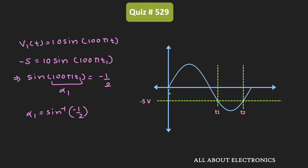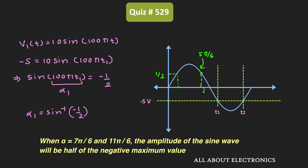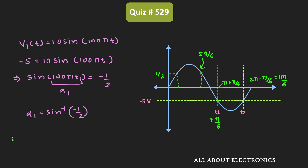For the sine wave, when the angle is equal to π/6, its amplitude will be equal to 1/2. Similarly, when the angle is equal to π minus π/6, that is 5π/6, the amplitude will also be equal to 1/2. When the angle is equal to π plus π/6, that is 7π/6, the amplitude will be equal to minus 1/2. So the angle at time T1 is equal to 7π/6, and it will become minus 1/2 again when the angle is equal to 2π minus π/6, that is 11π/6. So alpha2 equals 11π/6 and alpha1 equals 7π/6.